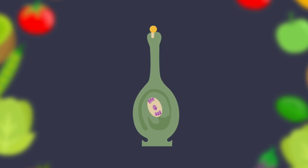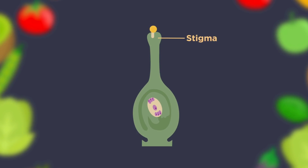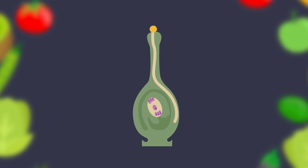Fertilization results in the production of seeds. A mature pollen grain containing two male sex cells has landed on the female stigma of the same species. The pollen grain grows a pollen tube that goes down the female style to the ovary, where it enters through an opening called the micropyle.